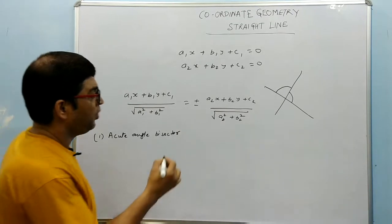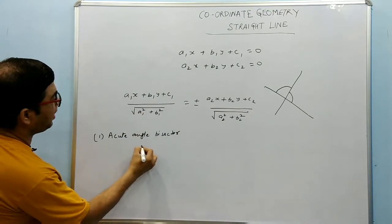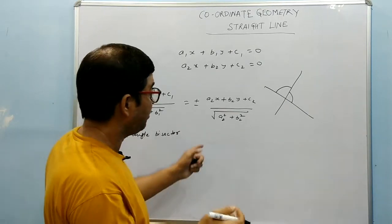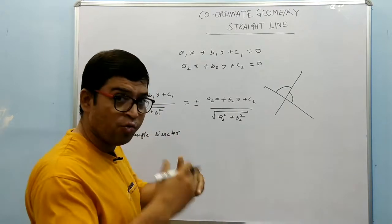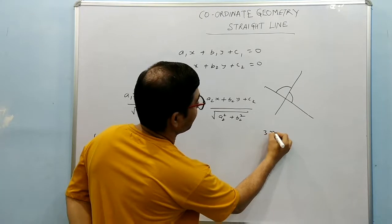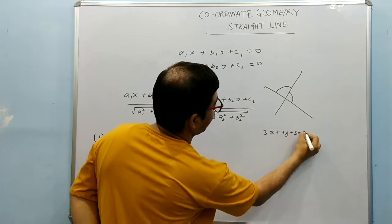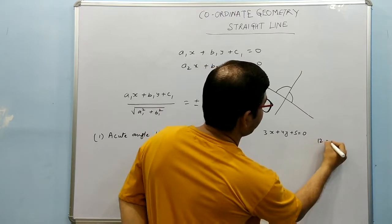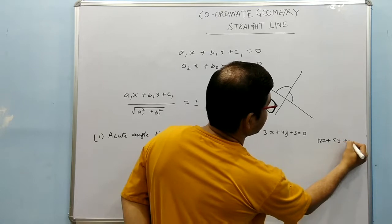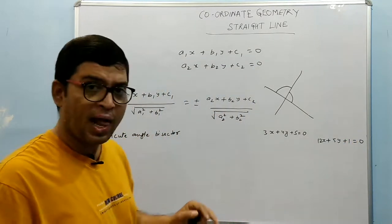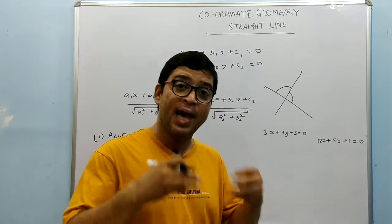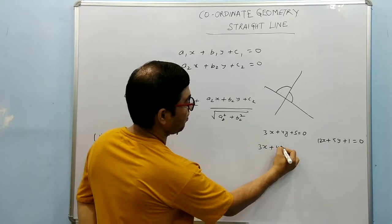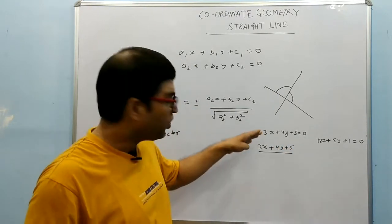I am giving you the methodology using two specific lines. Suppose one line is 3x plus 4y plus 5 equal to 0, and another line is 12x plus 5y plus 1 equal to 0. Two lines are there and we have to find the two angle bisectors, and we will see which one is the acute angle bisector. The two angle bisectors will be: 3x plus 4y plus 5 divided by the square root of 3 squared plus 4 squared, which gives 5.